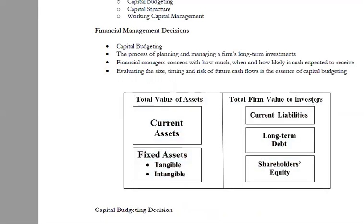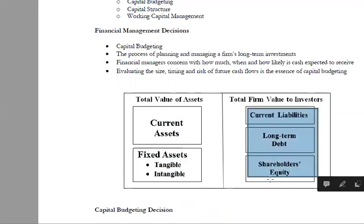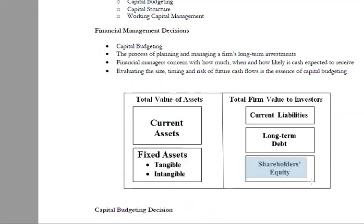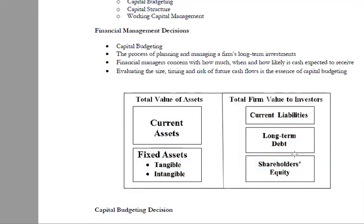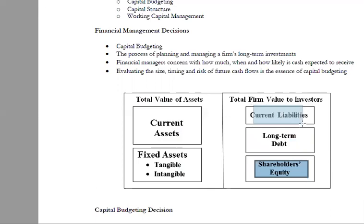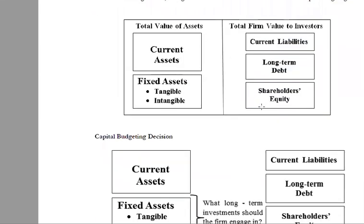On the liabilities and equity side, the firm's value belongs to the investors. This includes long-term shareholder equity — invested capital, undistributed profits, and reserves — as well as long-term loans from creditors. These investors are both equity holders and shareholders. Current liabilities include short-term loans.